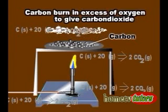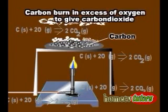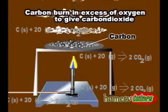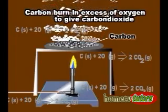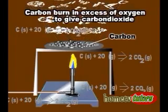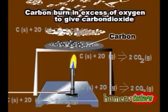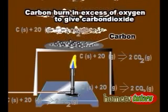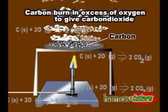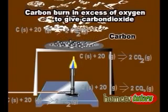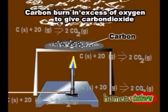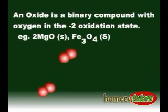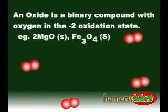Oxygen reacts with nonmetals to form covalent oxides, most of which are acidic. Carbon burns in excess oxygen to give carbon dioxide, which is the anhydride of carbonic acid — an acidic oxide.